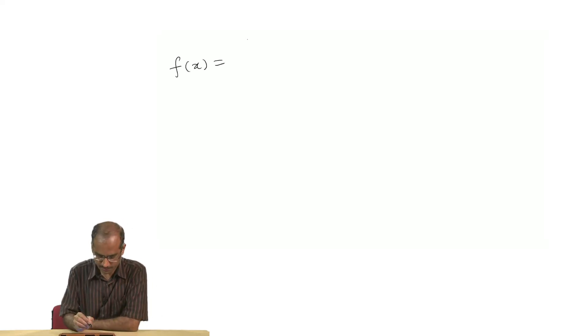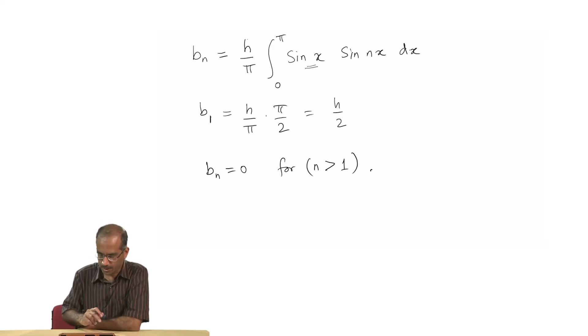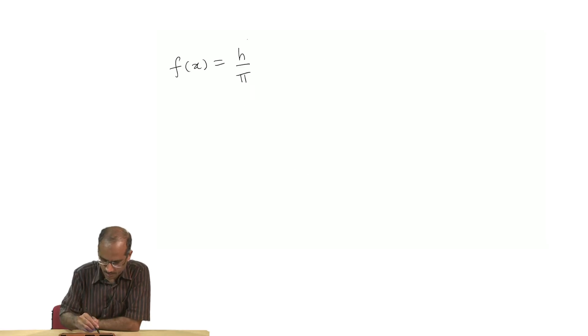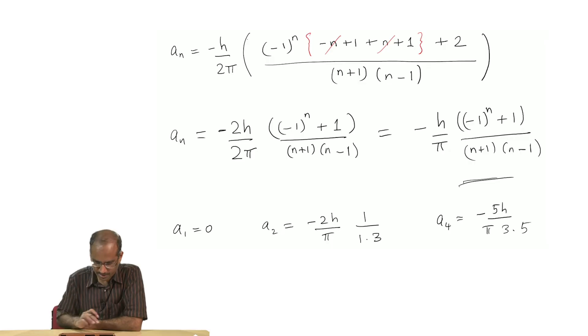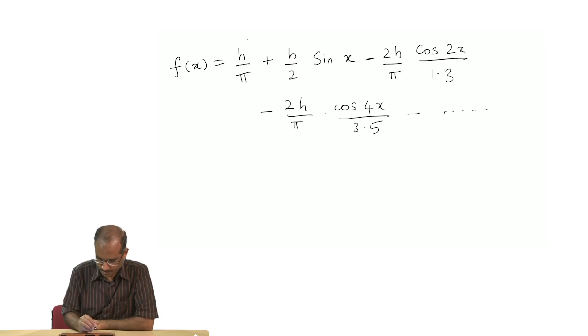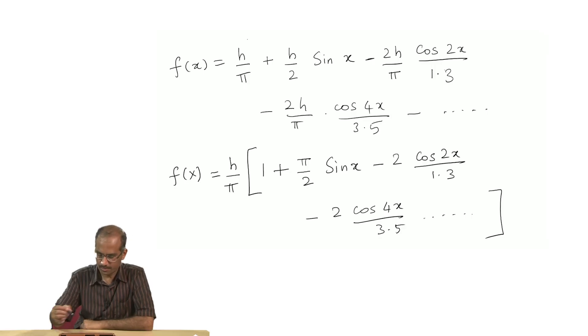Now we can put together all the results. f of x is equal to, there is b₁ alone, let me include that first. With all these, let us reconstruct the function. I can collect together all these terms and write the final expression. This is the final result for our function.